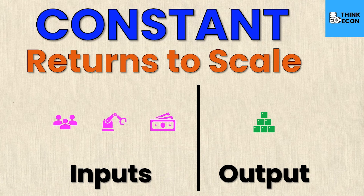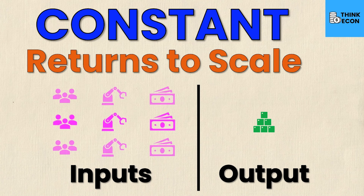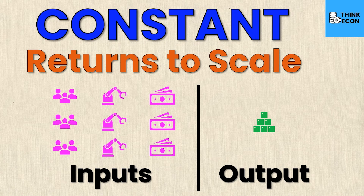Let's take a look at what happens if I were to triple my inputs. Right now I have one unit of labor, one unit of physical capital, and one unit of monetary capital. What if I triple all of my inputs? Now I have three times as much of all of my inputs. Well, under constant returns to scale my output must also triple. I now have three times as much input and therefore I get exactly three times as much output.